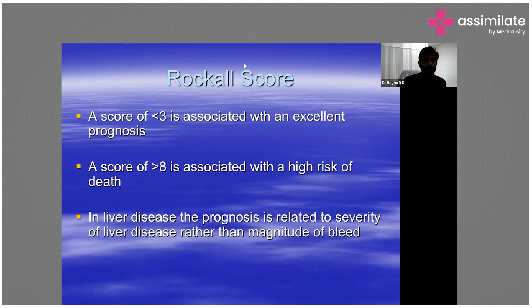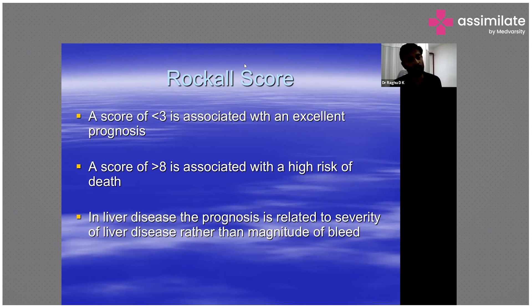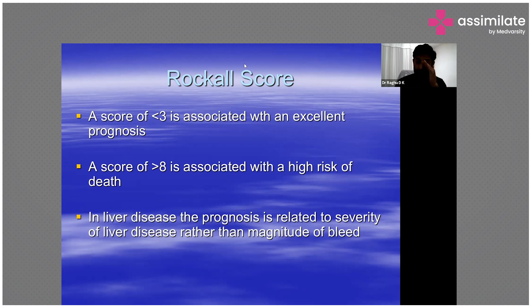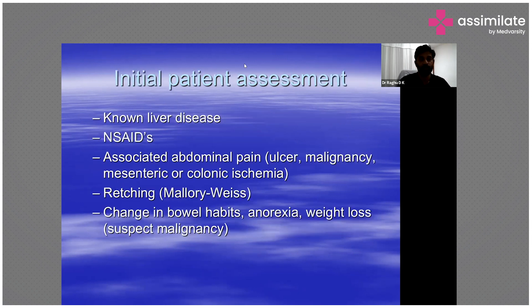In liver disease, prognosis is mainly related to the severity of the liver disease rather than just the magnitude of bleeding, because several other things go on — not just GI bleeding — that determine risk of death, including risk of portal hypertension, hepatic encephalopathy, and spontaneous bacterial peritonitis.